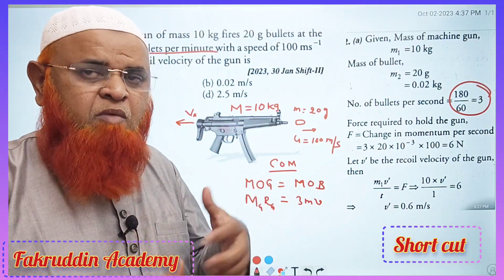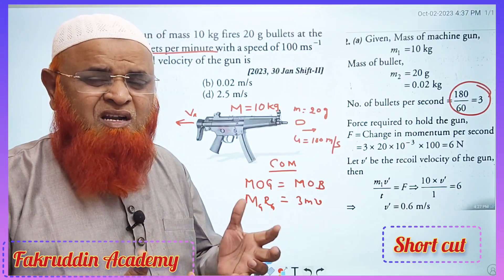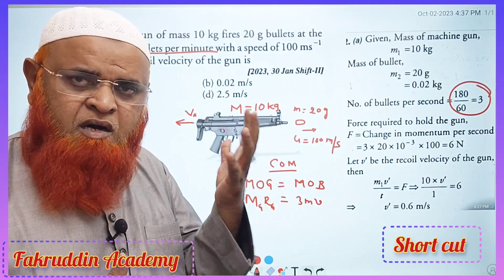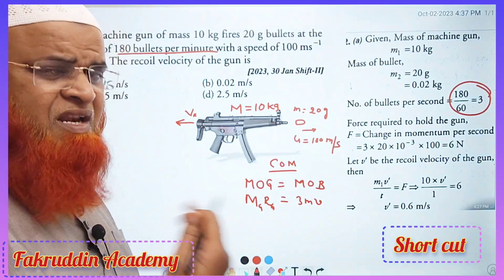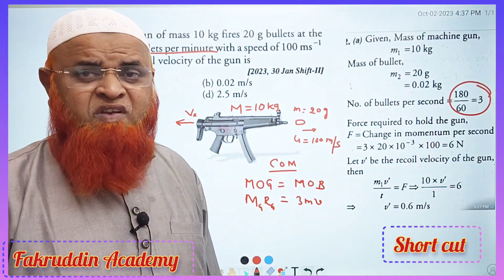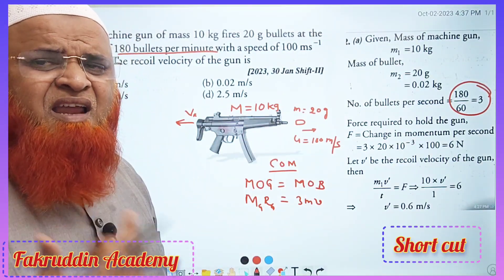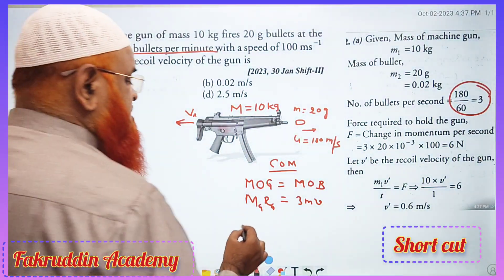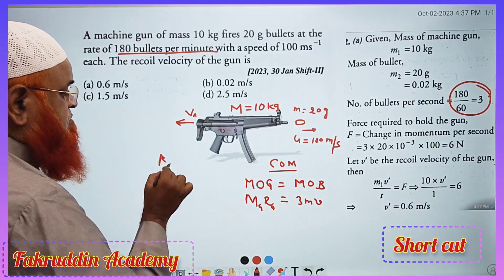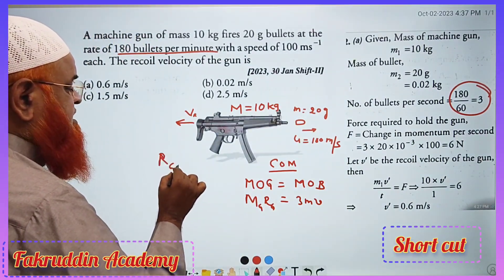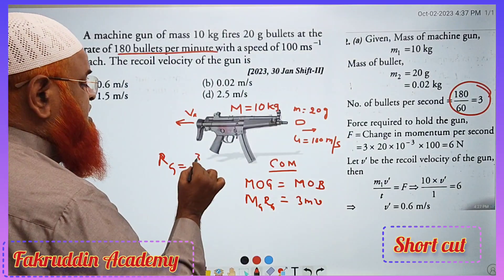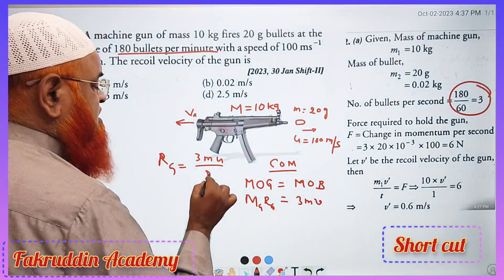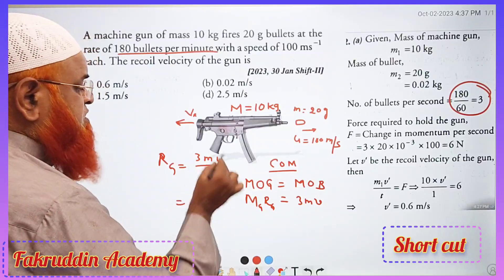It's a different approach where you have to reduce your efforts — less effort, more results. So the recoil velocity of the gun is nothing but three into m into u divided by the mass of the gun. That's it — so simple, a single step.